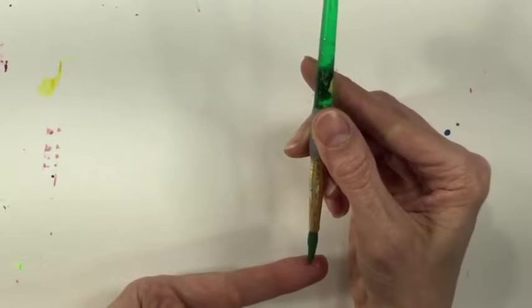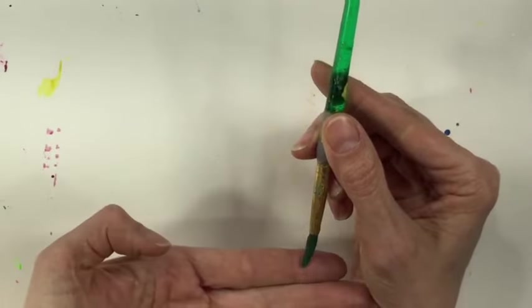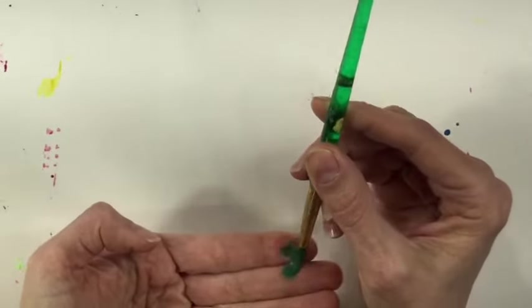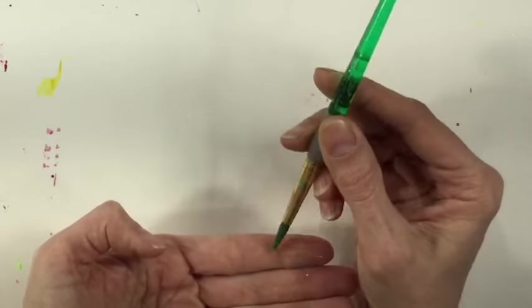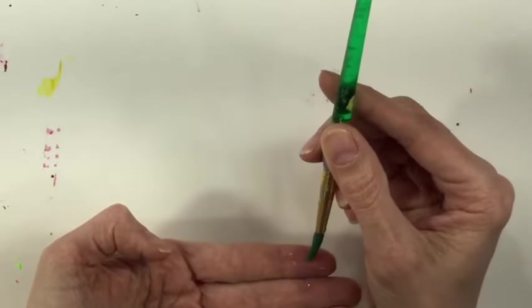She never ever scoots around on her bottom because nobody wants to go to the booty scootin' ballet. Keep that in mind as you're painting and make sure to use a light pressure when you paint your spirals. All right, let's get started.